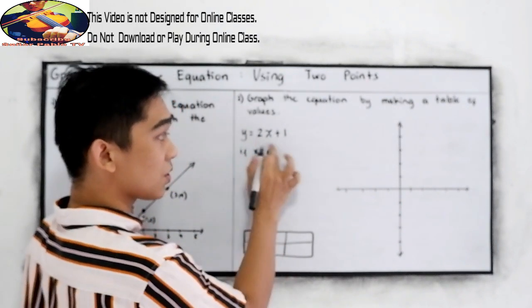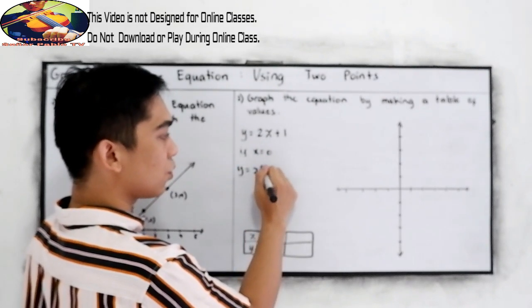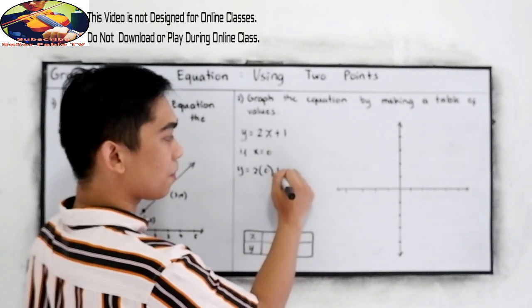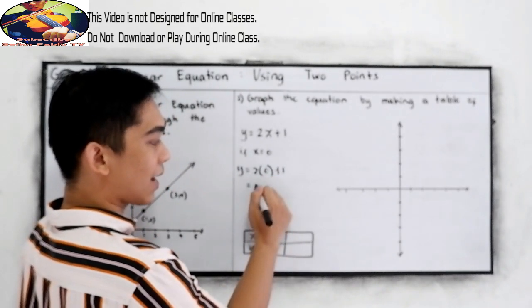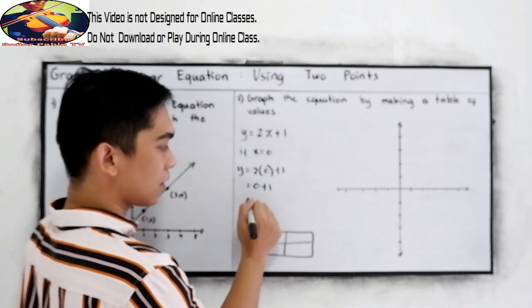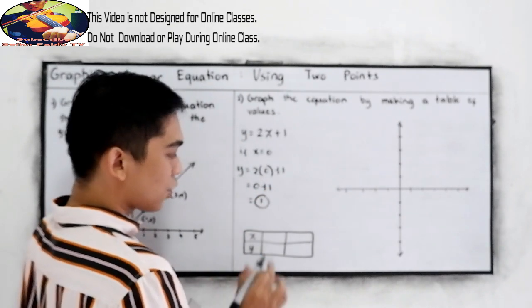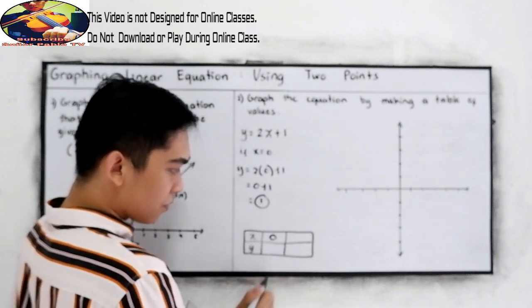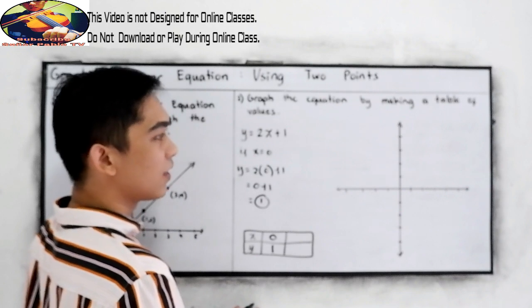So if x is equal to 0, then all I need to do is to substitute. So y is equal to 2 times 0 plus 1. So 2 times 0, that is 0, 0 plus 1, that is 1. So if x is 0, our y is 1.